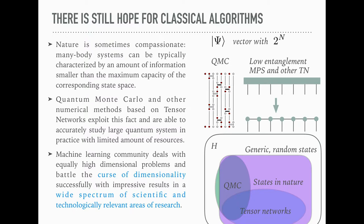This is because nature is sometimes compassionate. Many body systems can be typically studied or characterized by an amount of information which is smaller than this maximum capacity. We do exploit that idea in quantum Monte Carlo approaches, where you do a systematic sampling of the most important regions of this Hilbert space. That's how we are successful in applying these techniques, because we focus on this particular region of the Hilbert space where things are more relevant.